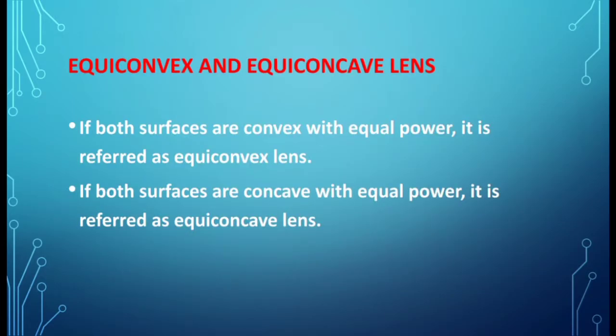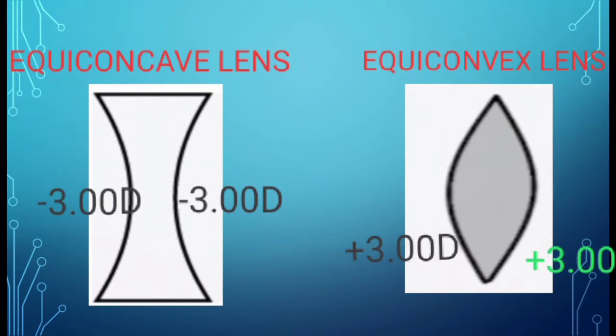Next, equiconvex and equiconcave lens. 'Equi' means equal. In an equiconvex lens, both surfaces are convex in nature and also have equal power. In an equiconcave lens, both surfaces are concave in nature with equal power. Look at the example: in the equiconcave lens, both surfaces are concave and the power is the same — minus 3 diopter. In the equiconvex lens, both surfaces are convex and the power distribution is also the same.